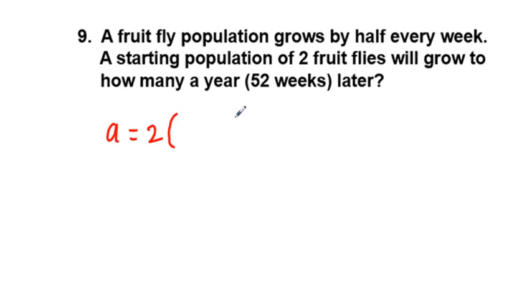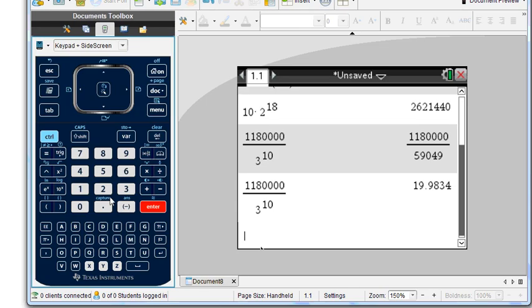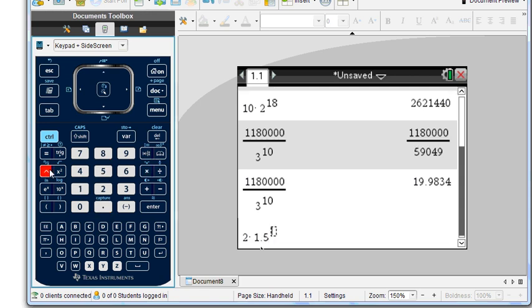Times, now here's the tricky part, grows by half. Grows by half would be growing by 50 percent from the original, so our base here would be 1.5. That's growing by half, and that's to the power of 52 for 52 weeks in a year. So just working it out in the calculator now, we have 2 times 1.5 to the power of 52.